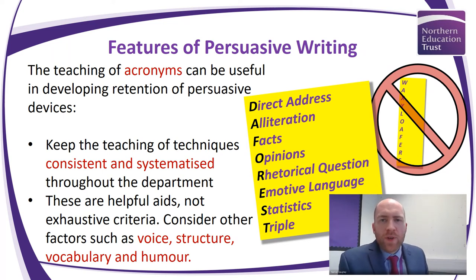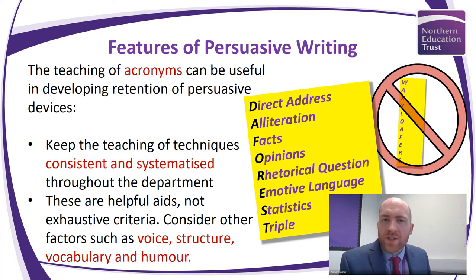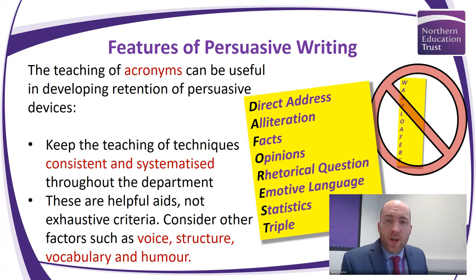Now for the features of persuasive writing — there's a lot of debate about acronyms. On screen we have DEFOREST, a standardized version of key persuasive features — not an exhaustive list, but the go-to ones: Direct address (using 'you' or 'we'), Alliteration, Facts and opinions, Rhetorical questions, Emotive language, Statistics, and Triples (the rule of three). This is a solid list to use.